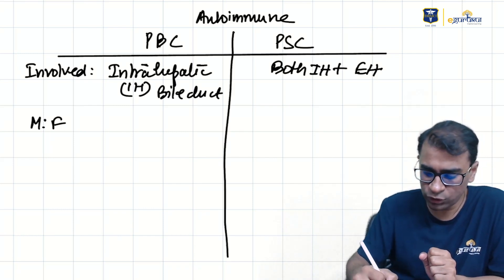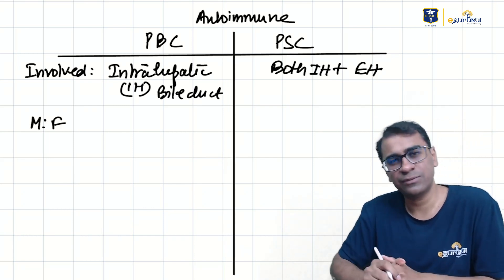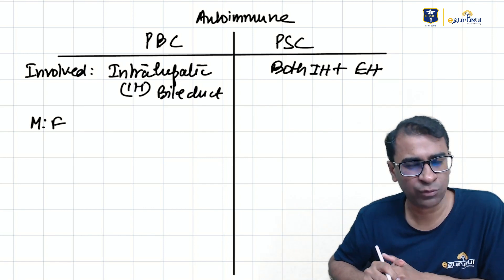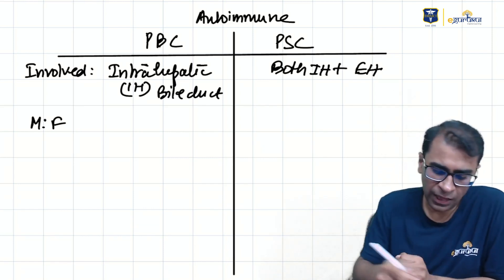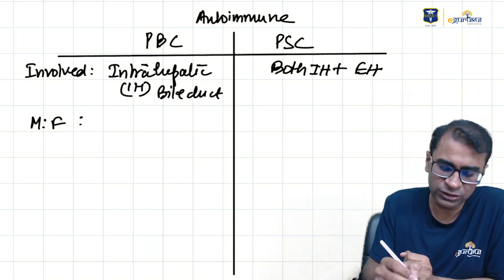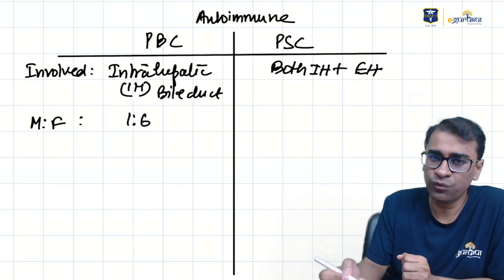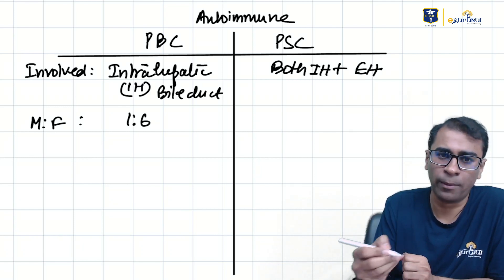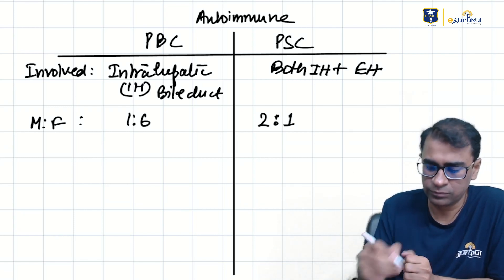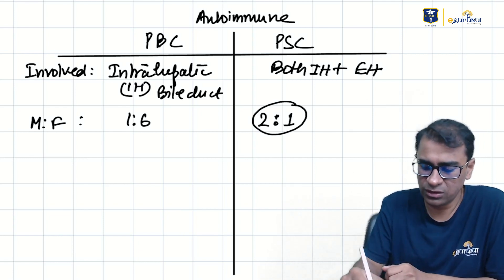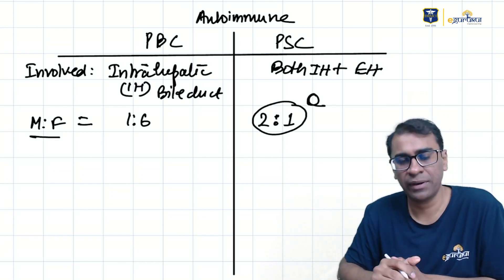Since both are autoimmune, they often involve the same genes: PTPN22 and CTLA-4. The male-to-female ratio for PSC is skewed towards females at 1:6. PBC is one of those rare autoimmune diseases more commonly seen in males, with a ratio of 2:1 — which is quite unique.